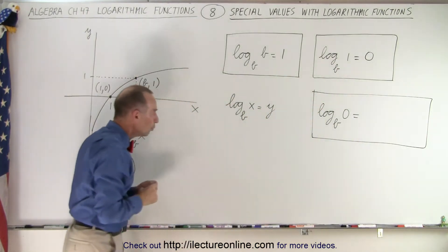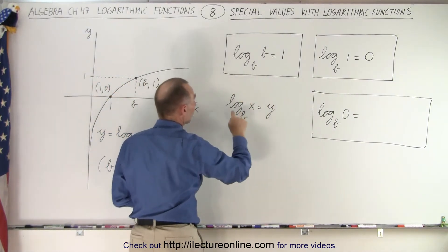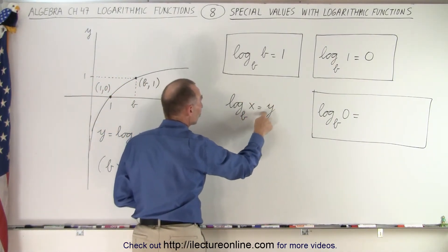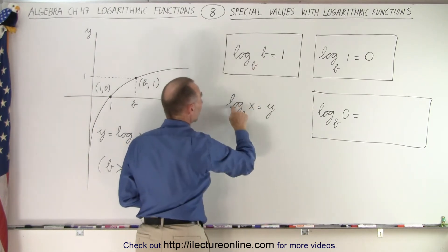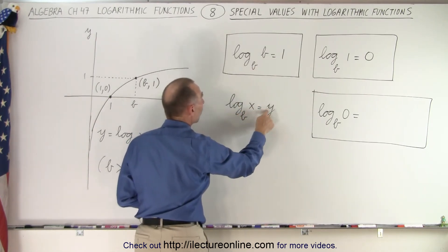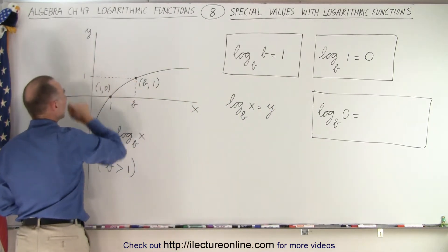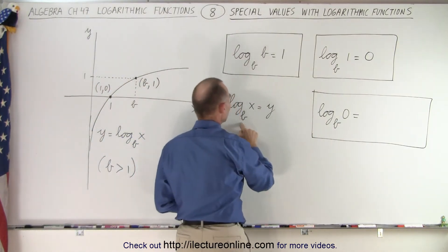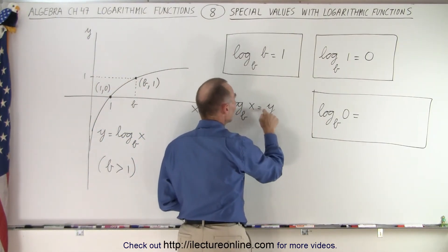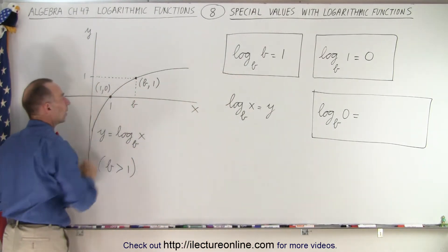So notice that we have written the function in a more general form: log base b of x equals y. When we replace x by b, the log of base b of b, we get 1 for y. That's what we have over here. When x equals b, y is equal to 1. And the log base b of 1, we get y equals 0. That's what we find over here. When x equals 1, y is equal to 0.